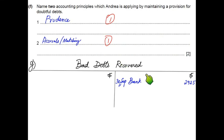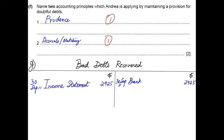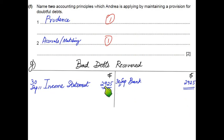Since bad debt recovered is a credit, it is income. It is transferred to the income statement by debiting bad debt recovered and crediting the income statement. There can be more than one bad debt recovered during the year; all are added and transferred at year end. That concludes the underlying concepts behind bad and doubtful debt.